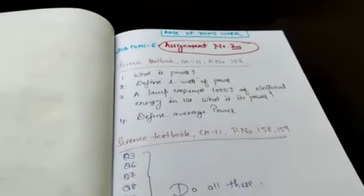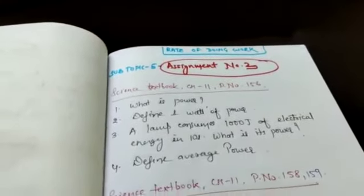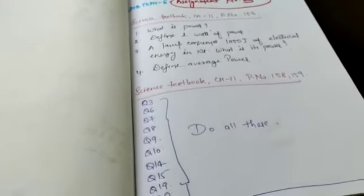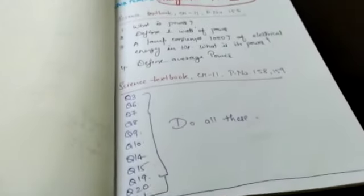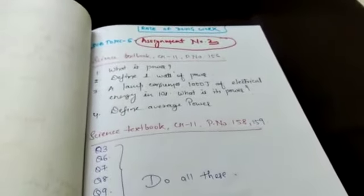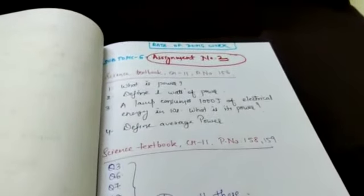Then next we have assignment number third which is taken from chapter 11, page number 156. Question number 1, 2, 3, 4, and then question number 6, 7, 8, 9, 10, 14, 15, 19, 20, 21. These you have to do in your science copies and submit this work on Google Classroom. Thank you.